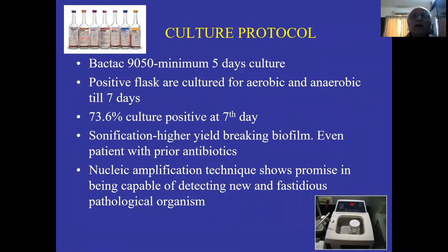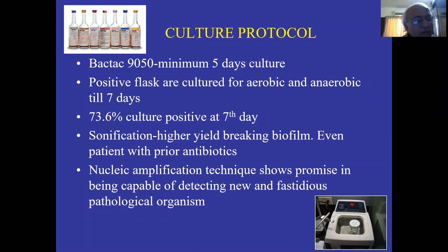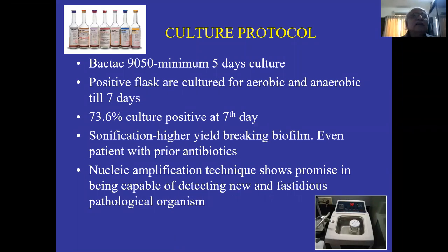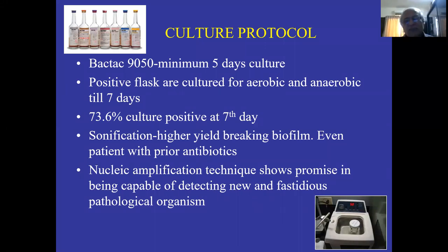The next is the culture part. There are various bottles available, and as an orthopedic surgeon you should know which bottle to use. BacTec is ideal — 9550. The minimum required is 5 days, and a positive culture, aerobic, can be till 7 days. Sometimes it is a low-virulence organism. If the growth is not there, ask the pathologist to continue for another 7 days — there is a 20–30% possibility you might grow something. That is known as extended culture.